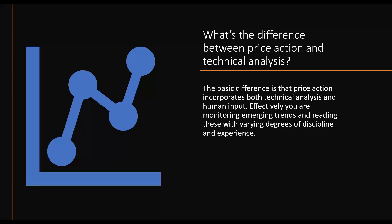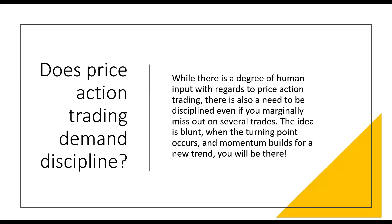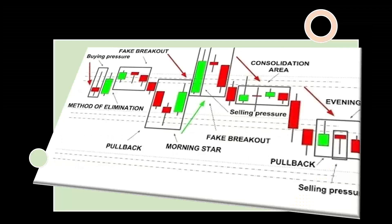The key is to see what's in front of you as opposed to trying to manipulate the chart data into what you want to see. The basic difference is that price action incorporates both technical analysis and human input. You are monitoring emerging trends and reading these with varying degrees of discipline and experience. While there's a human degree of input with regards to price action trading, there's also a need to be disciplined even if you marginally missed out on several trades. So remember: we want to look for our bar patterns, look at our support and resistance levels, and look at our chart patterns.